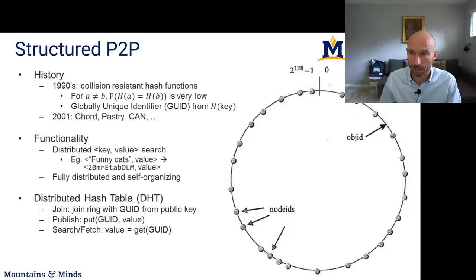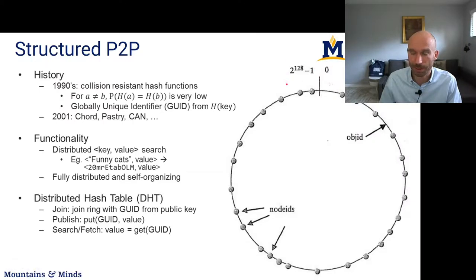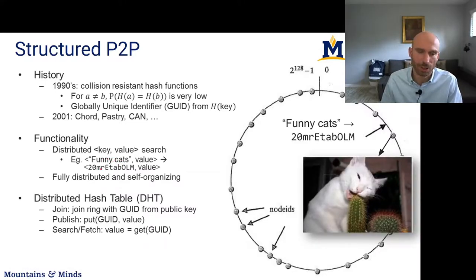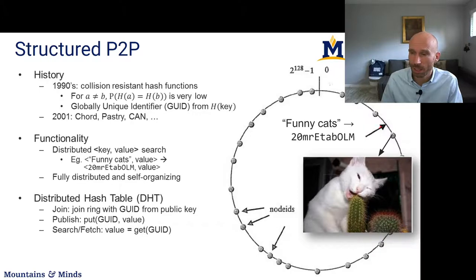Here's how they work: you have the IDs of nodes participating in the system — maybe their IPs. You can hash those IPs and put them on a logical ring where values go from 0 to the maximum hash value. Likewise, you can take the IDs of data you want to store and also perform a hash. For example, if you want to store a 'funny cats' picture, you can hash the name 'funny cats' to some value, and that hash value will logically fall somewhere on the ring. The node following that hash position on the ring is responsible for storing all data that hashes to positions up until the next node. So to store 'funny cats,' you contact that node and ask it to store the data.